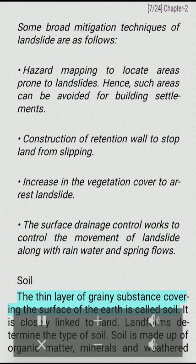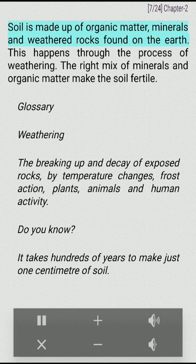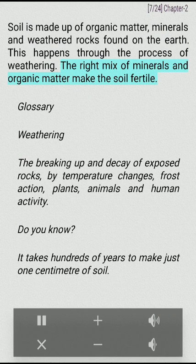The thin layer of grainy substance covering the surface of the earth is called soil. It is closely linked to land. Landforms determine the type of soil. Soil is made up of organic matter, minerals and weathered rocks found on the earth. This happens through the process of weathering. The right mix of minerals and organic matter make the soil fertile.